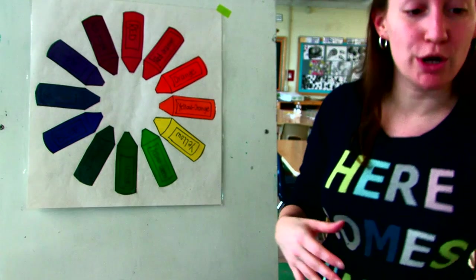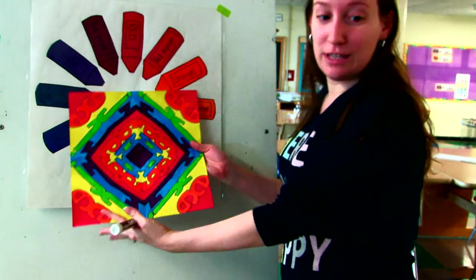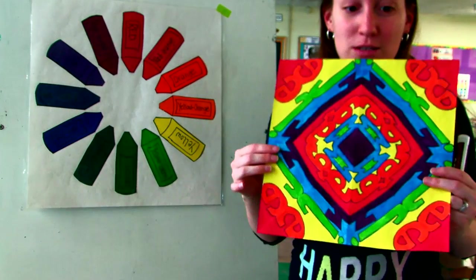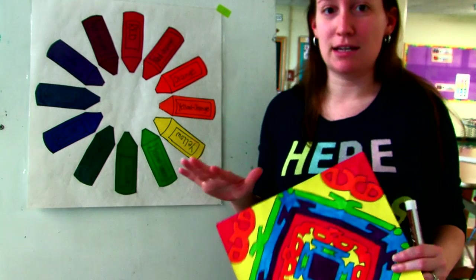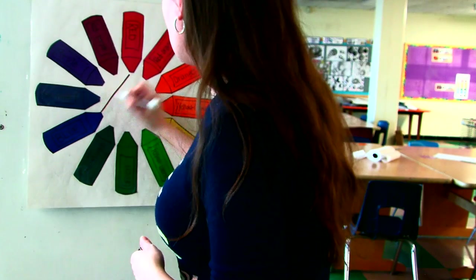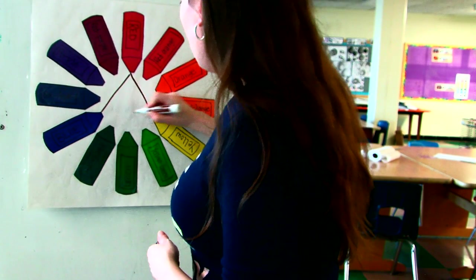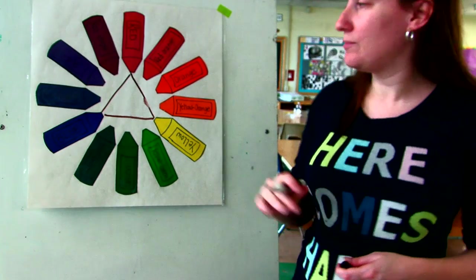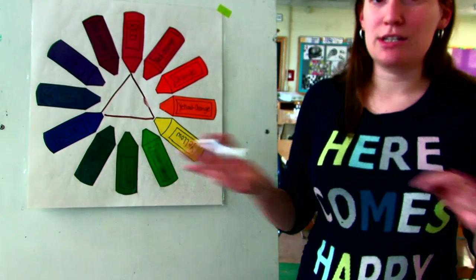When we started our lovely radial name designs, we talked about primary and secondary colors. So our primaries are red, blue, and yellow. These are our primary colors.